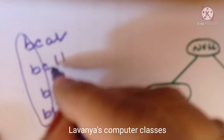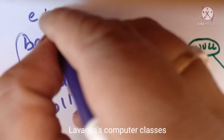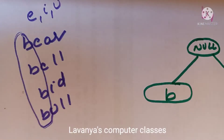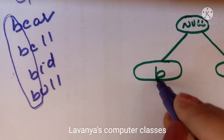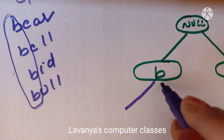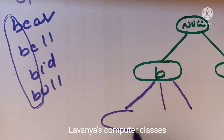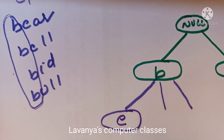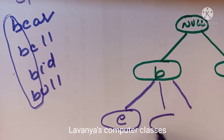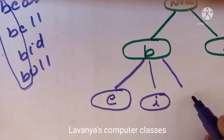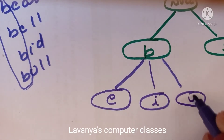For the B node, the second characters are E, I, and U — three different characters, so three different pointers. E appears in bear and bell, I in bid, U in bull. These are placed in alphabetical order: E, I, U.